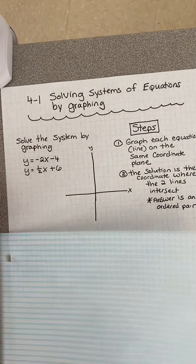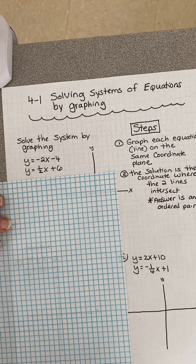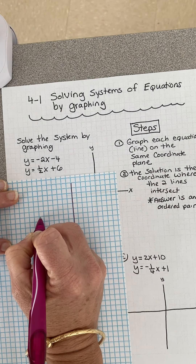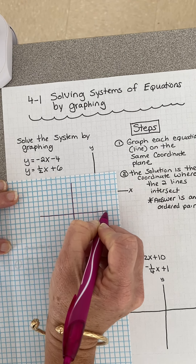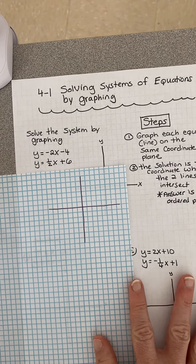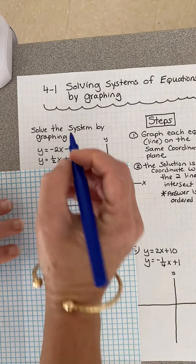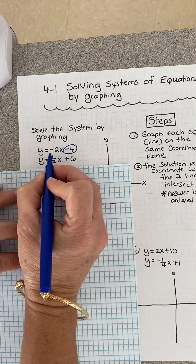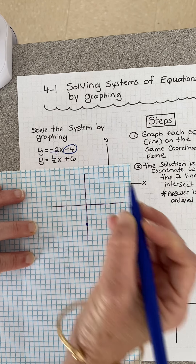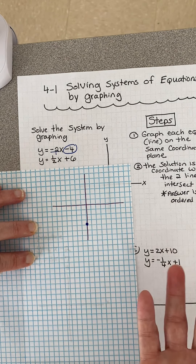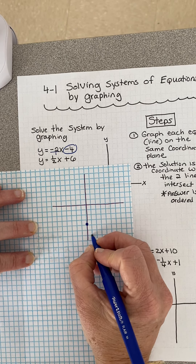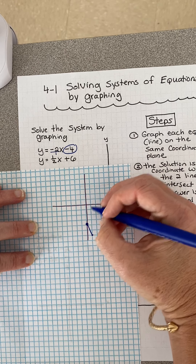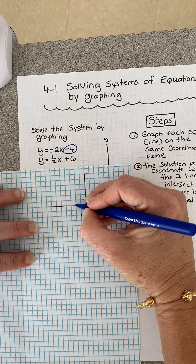Let's graph the first line. The y-intercept is negative 4, so I go down to negative 4. My slope is negative 2, so I'm going to put negative 2 over 1. I always like to go right for my first move, so I go down 2, right 1. Now that I know where the line goes down, I can back it up - up 2 over 1, up 2 over 1, up 2 over 1.